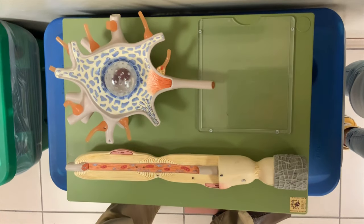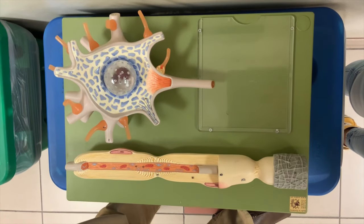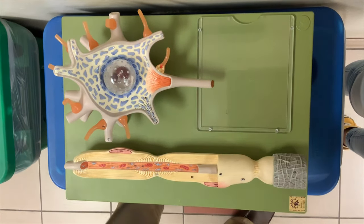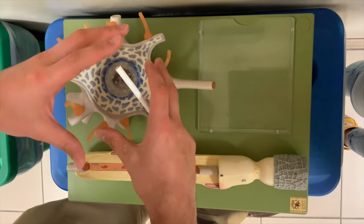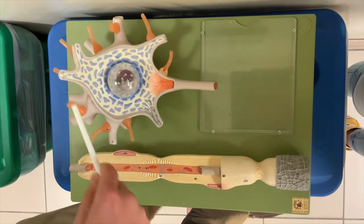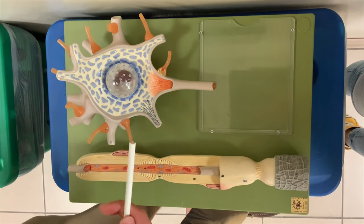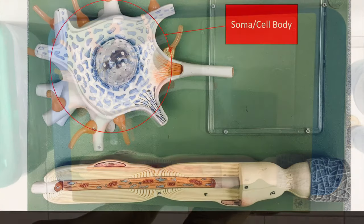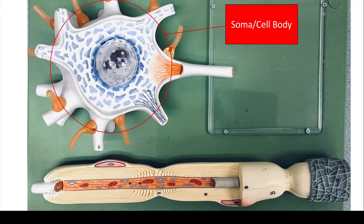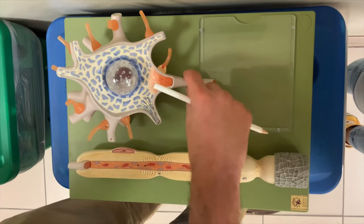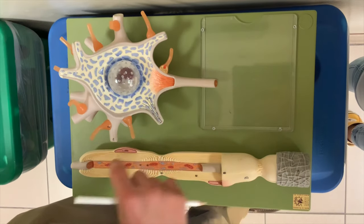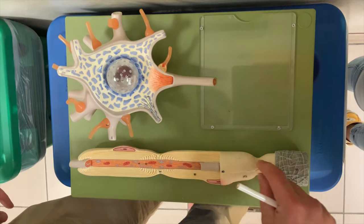Here's a model of the neuron. To start off, let's break it down into the soma. This whole thing is the soma, or the body. And then we have the axon, and you can see the axon travels through here too.